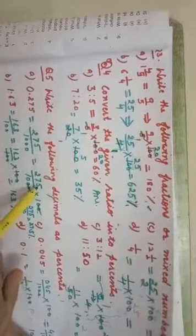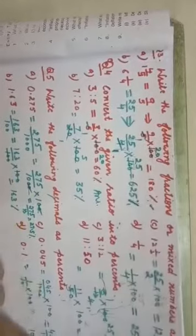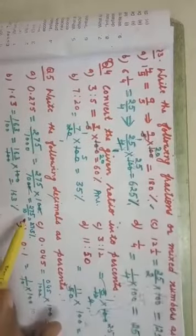275 by 1000, multiply with 100. We cancel 100 from 1000, leaving 10 in the denominator. So we have 275 by 10. Converting this: the decimal goes after one digit from the right because denominator is 10. So the answer is 27.5%.